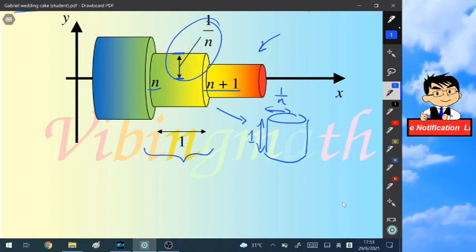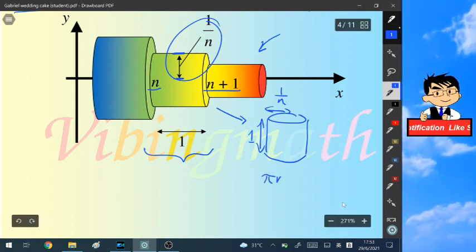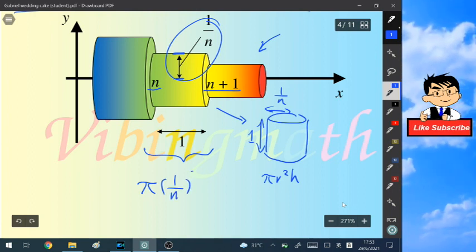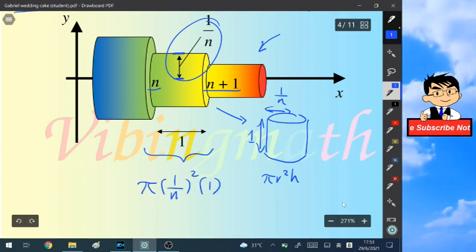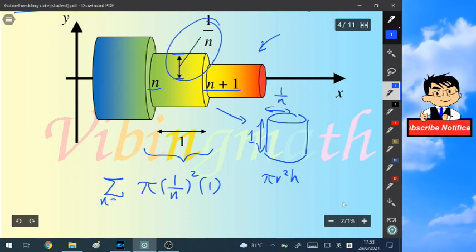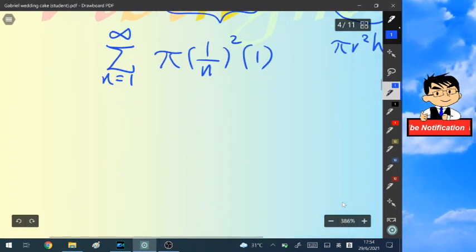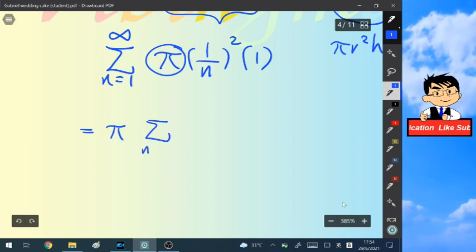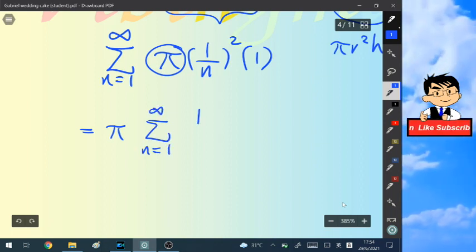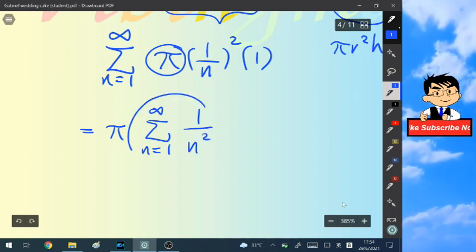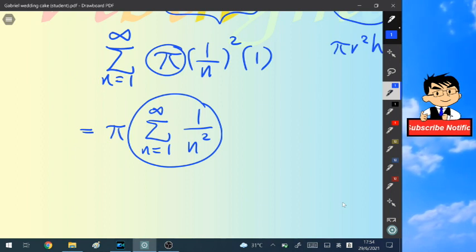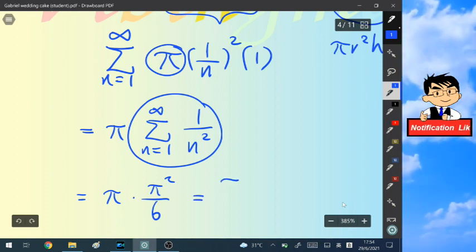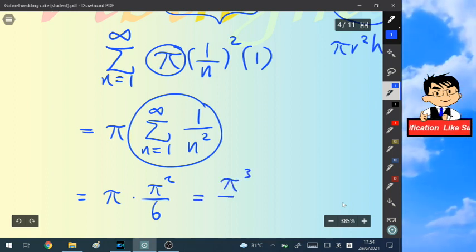So we use the formula for the volume of a cylinder, π r² h, which is π times (1/n)² times 1. And we are taking the summation from n equals 1 to infinity. Since π is a constant, we take it out to the front, leaving the summation from n=1 to infinity of 1 over n². And this sum is equal to Euler's famous Basel problem, which has the value of π² over 6. So the volume of the wedding cake is π³ over 6.